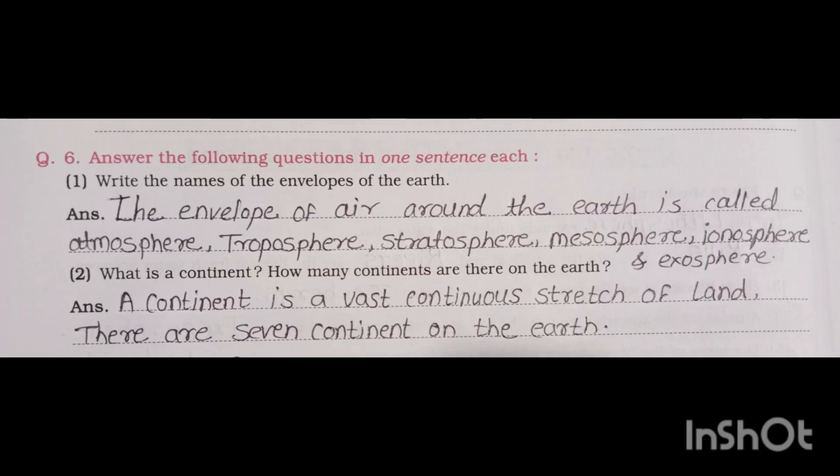Question number six, answer the following questions in one sentence each. First, write the names of the envelopes of the earth. The envelope of air around the earth is called the atmosphere. The layers are: troposphere, stratosphere, mesosphere, ionosphere, and exosphere.